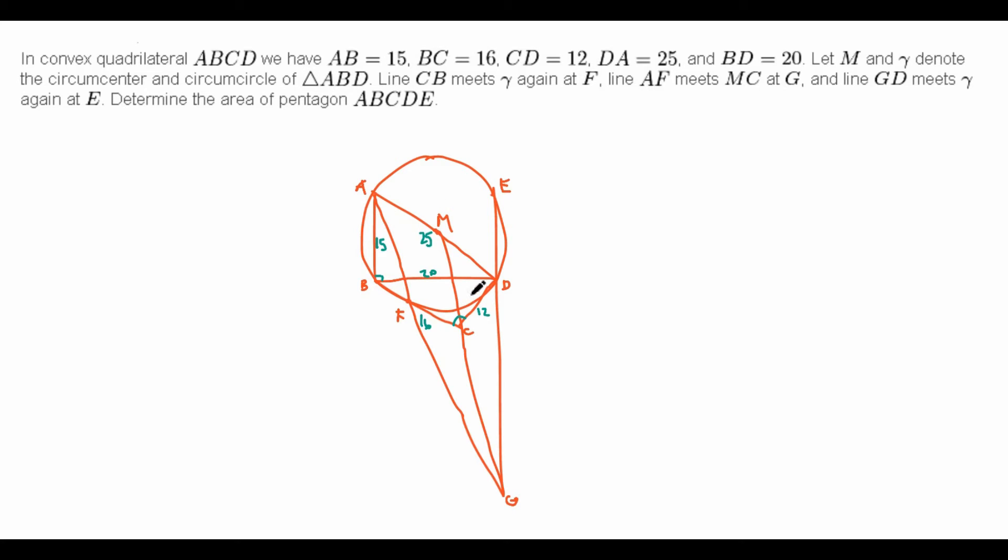So, now that we have these similar triangles, we might go ahead and chase some angles. Well, this angle is clearly the same as this angle by the similar triangles. So, in fact, we know that AD is parallel to BC, because a transversal forms equal angles with them.